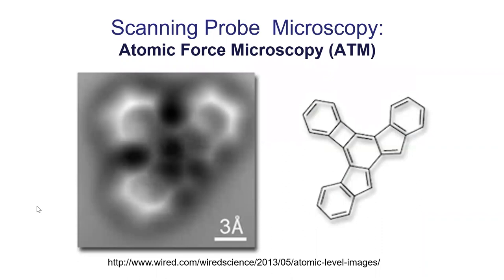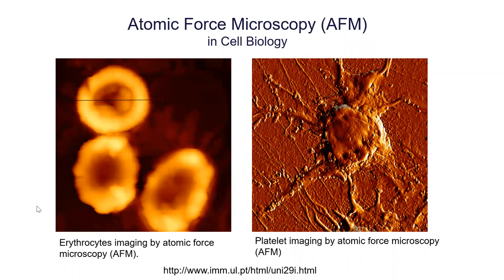Here are some images captured by atomic force microscopy. Here's a molecule and you can make out those benzene rings on it. For biological specimens, we can't get right down to the atom level — biological specimens tend to be more squishy than a metal surface — but we can still get some pretty interesting images. On the left there are some erythrocytes, which are red blood cells. On the right, somebody has a platelet, and you can see some very interesting detail.